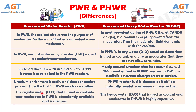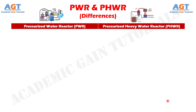Number 5. The regular water used as coolant-cum-moderator in pressurized water reactors is abundantly available and is cheaper. Whereas, the heavy water based on deuterium used as coolant and moderator in pressurized heavy water reactors is highly expensive.